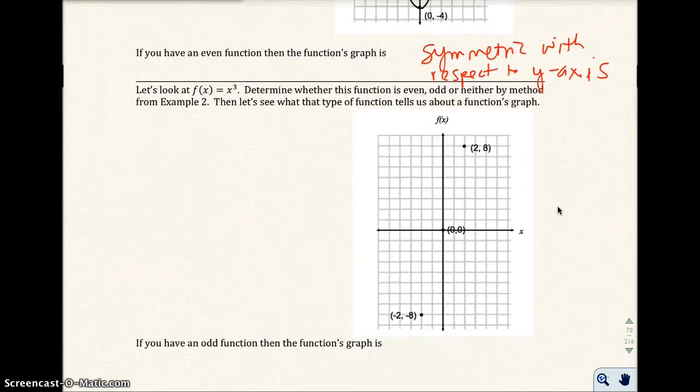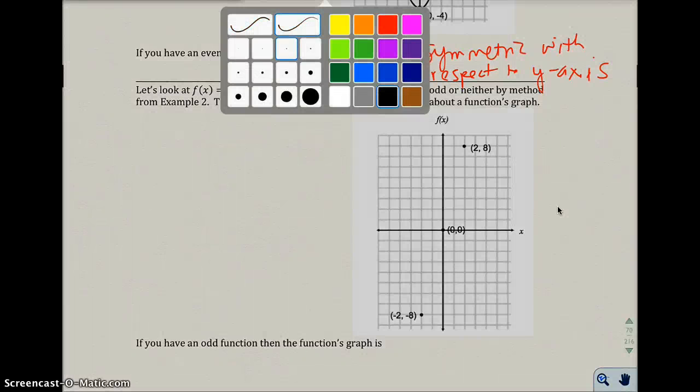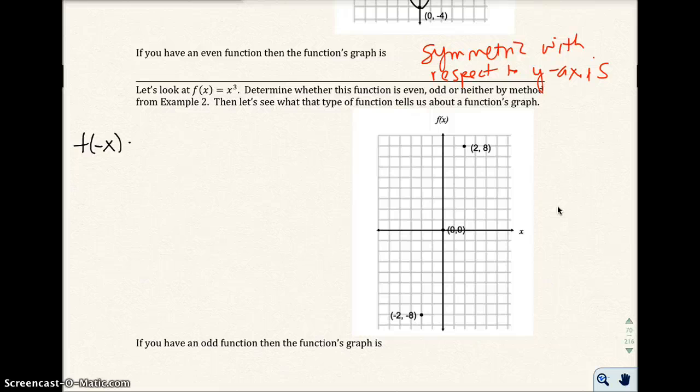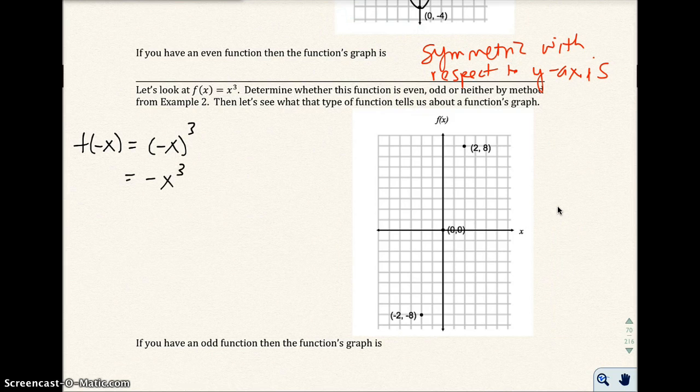Let's look at f(x) = x³ and determine whether it's even or odd or neither by the method from Example 2. Then we'll put in the negative x there. This gives me negative x to the third. Looking at the original function and this function, it just changed its sign, which indicates an odd function.